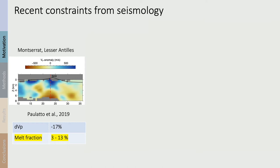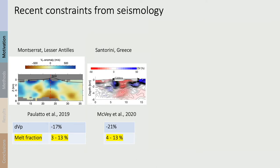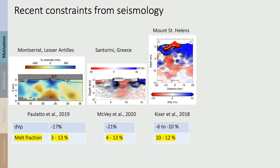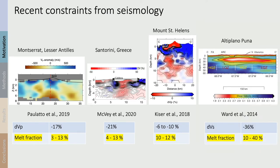Let's have a look at some of the more recent volcano tomography studies. I've been involved in some of these, particularly on Montserrat and Santorini, but there are other excellent datasets from Mount St. Helens and Altiplano Puna and many others. These more recent studies show seismic velocity anomalies as large as 20% and sometimes more, but the melt fraction estimated is usually around 10%. What's very important to notice is how wide the uncertainty range on these melt fraction estimates is.